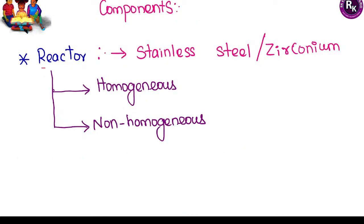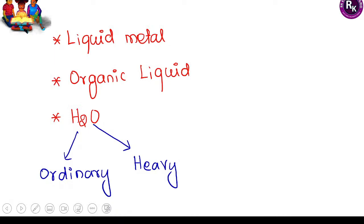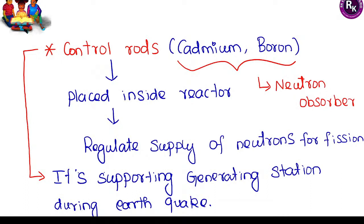The reactor has two types: homogeneous and non-homogeneous, made up of stainless steel or zirconium. For coolant material, two types are used: lithium and NaK (sodium). Types of coolant include gas coolant reactors using hydrogen, carbon dioxide, or helium; liquid metal coolant; organic liquid; heavy water; or ordinary water. Control rods are placed inside the reactor to supply a sufficient amount of neutrons during the fission reaction.